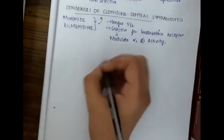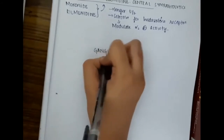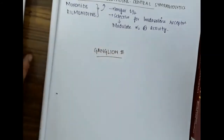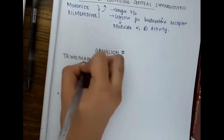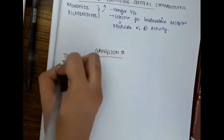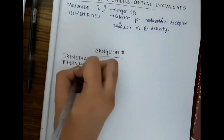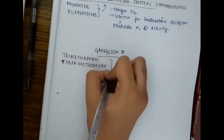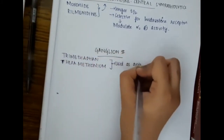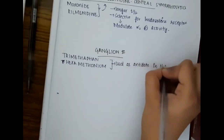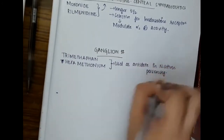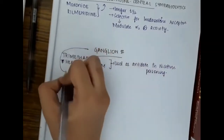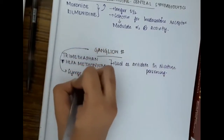Ganglion blockers are of two types: trimethaphan and hexamethonium. Trimethaphan and hexamethonium are used as antidotes in nicotine poisoning.